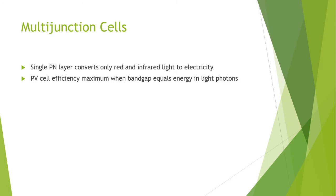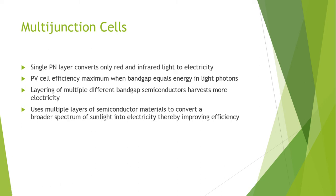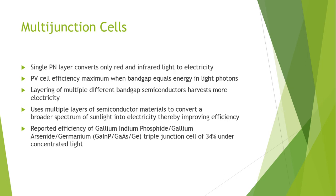Photovoltaic cell efficiency is maximum when band gap equals energy in the light photons. A layering of multiple different band gap semiconductors converts more electricity because they are capable of converting the different bands rather than using only red and infrared spectrum of sunlight. Multiple layers of different semiconductor materials convert a broader spectrum of sunlight into electricity, thereby improving the efficiency which is low in case of other semiconductor solar cell technologies.